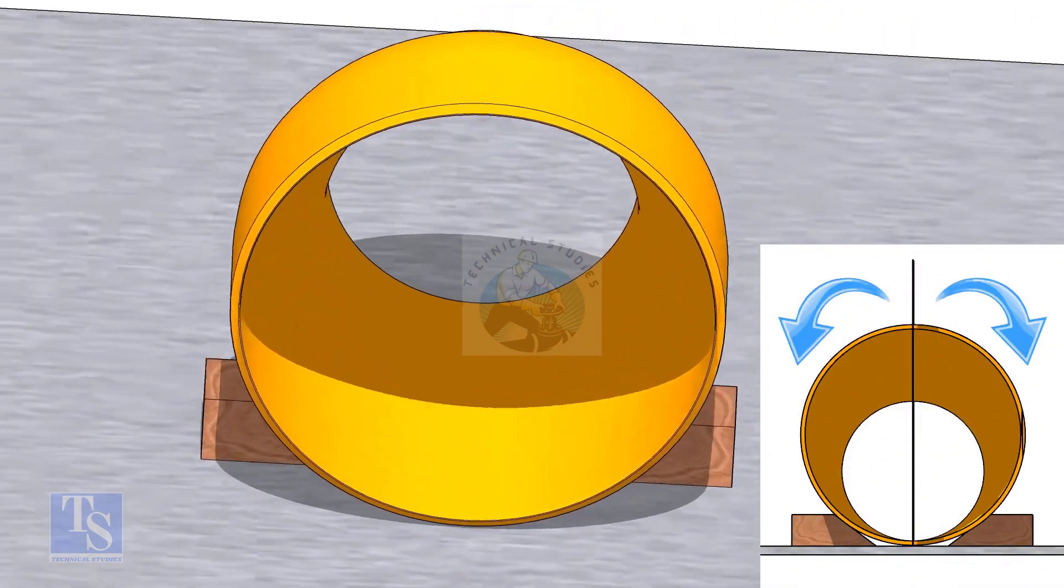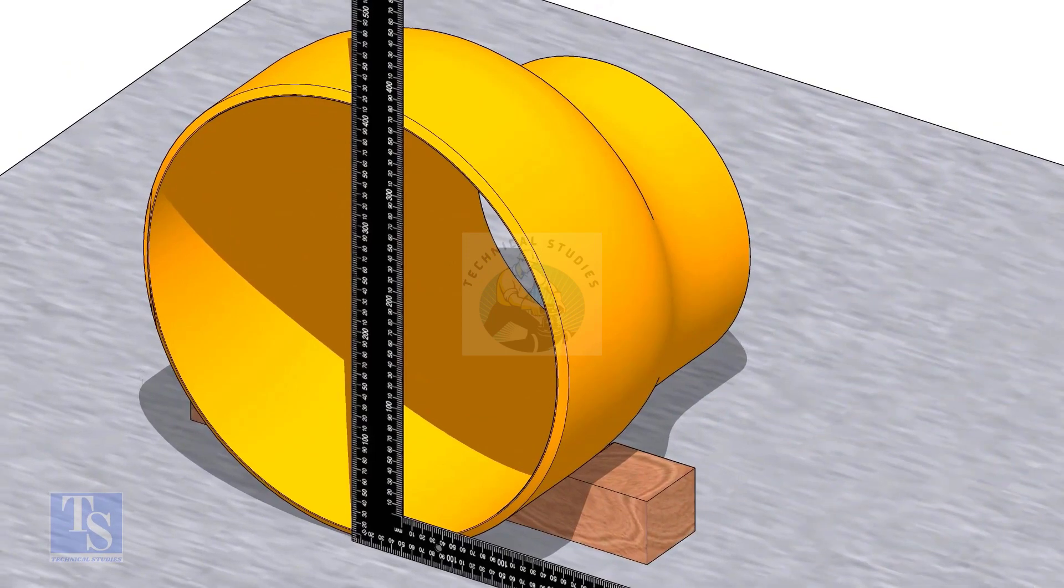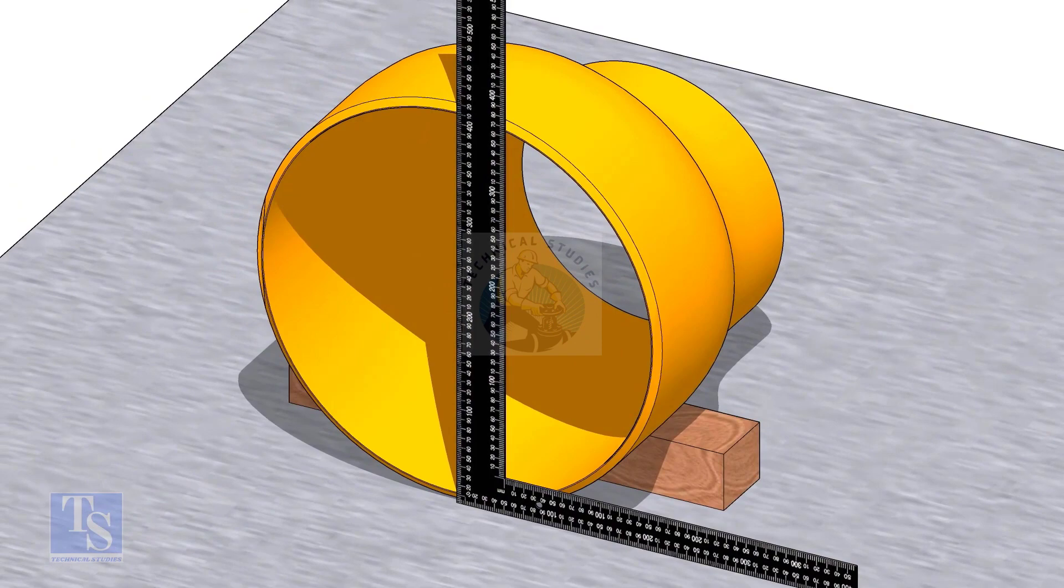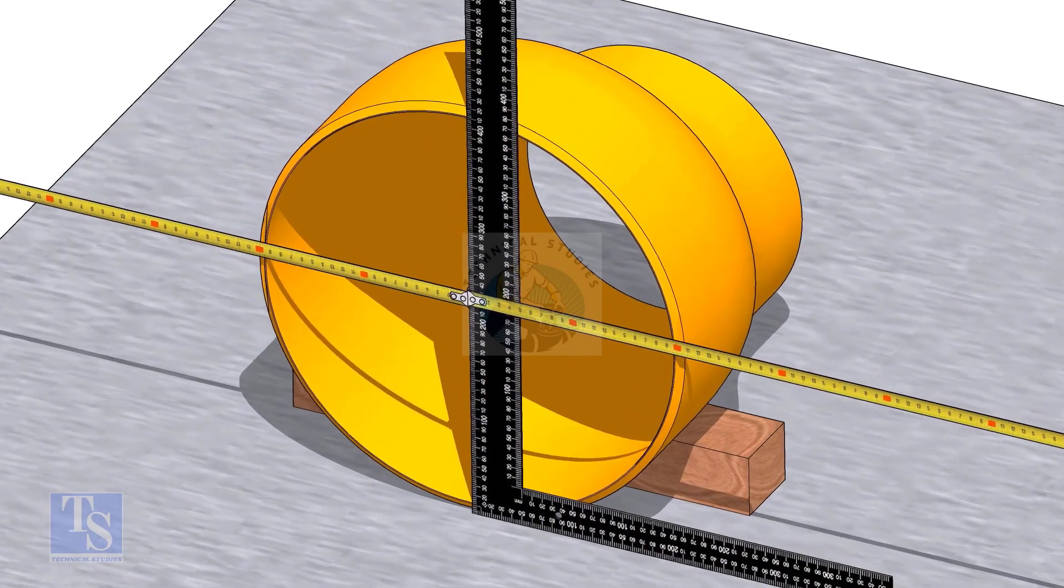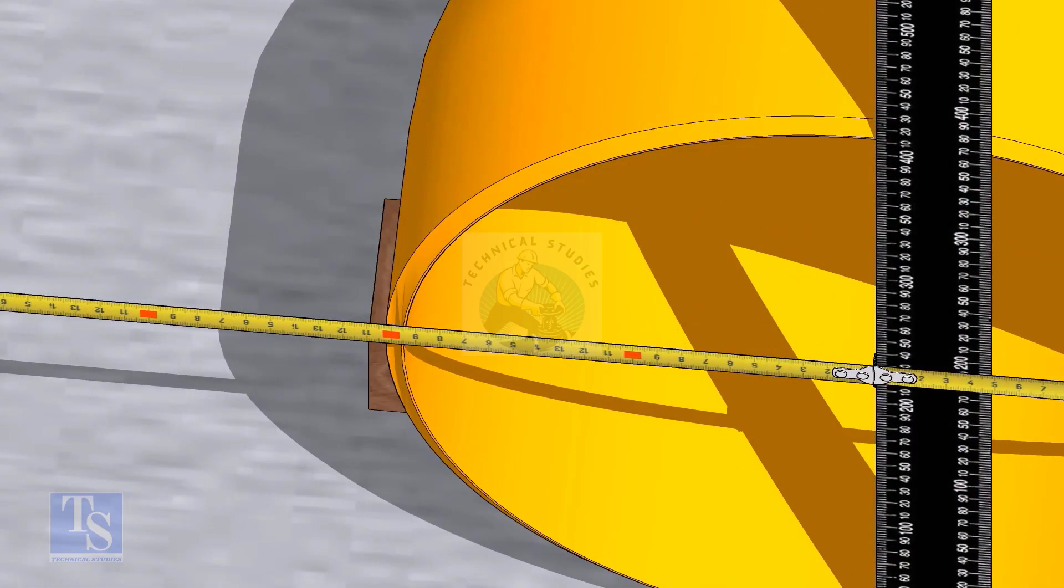Now lock the reducer from both sides to restrict it from rotation. Put a right angle on the face of the reducer as shown. Measure the distance from the right angle to the outer face of the reducer. Make it equal by moving the right angle.